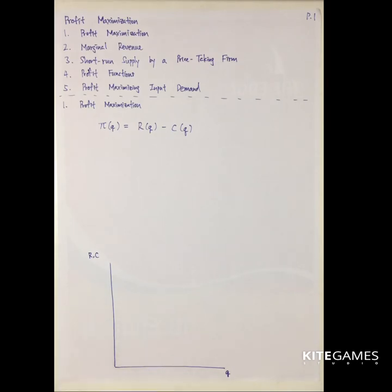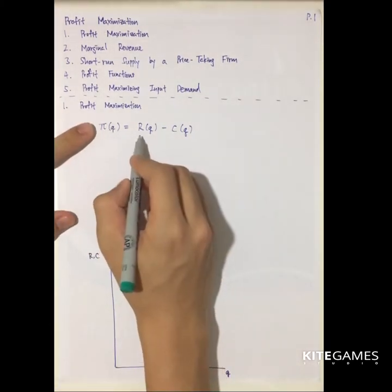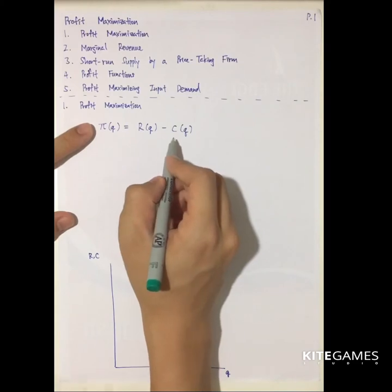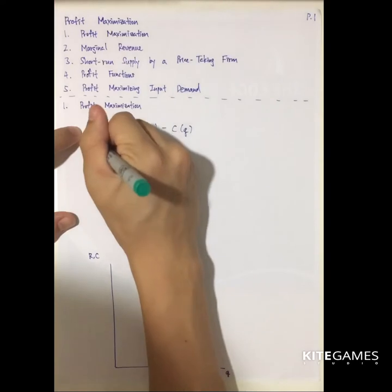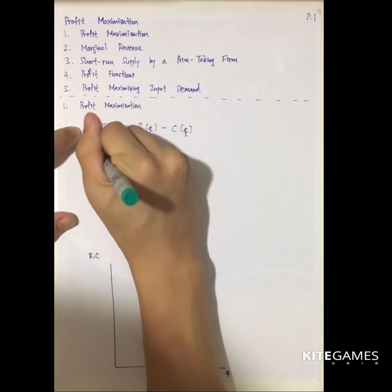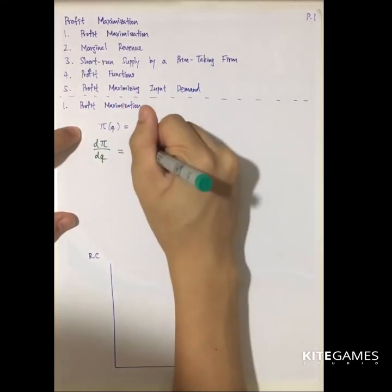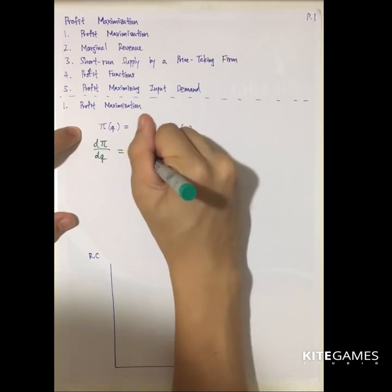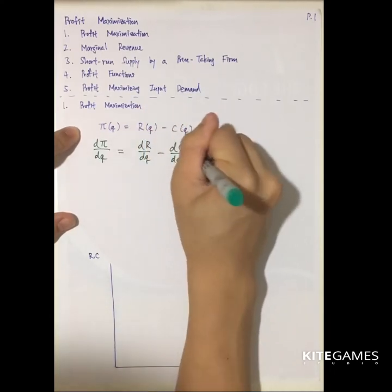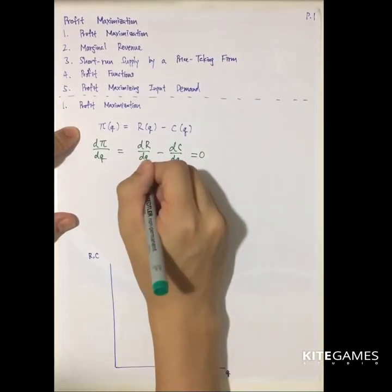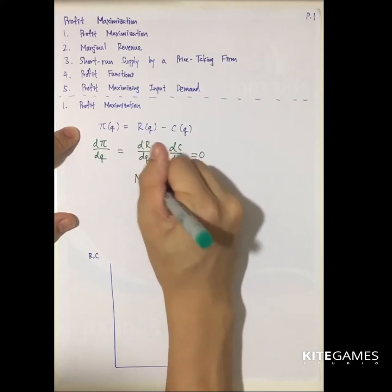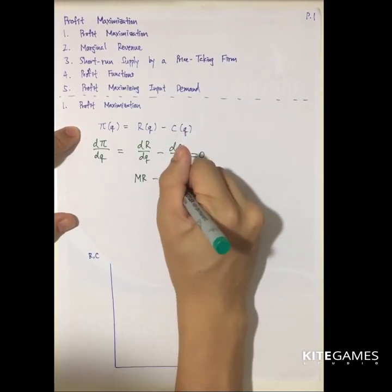Let's get started. We will first take a look at the profit maximization problem. This is the profit equation: profit is equal to revenue minus cost. Mathematically, if you want to maximize the profit, you do the first order condition, which gives dR/dQ minus dC/dQ set equal to zero. dR/dQ is the marginal revenue, and dC/dQ is the marginal cost.